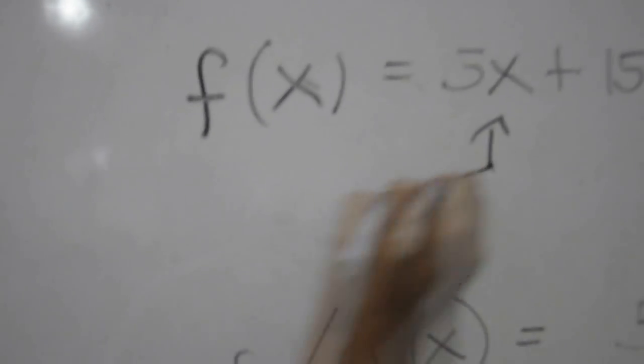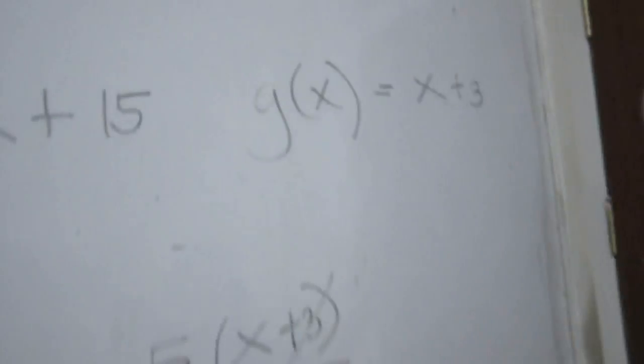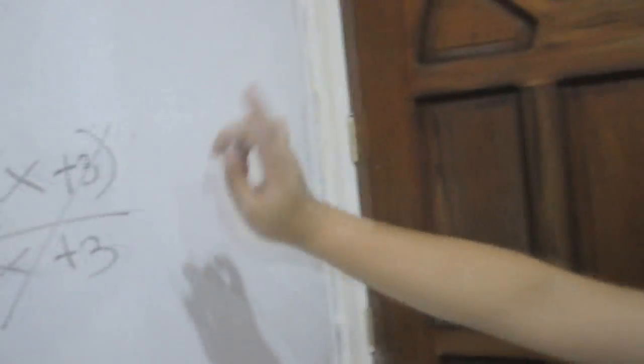The factor of this is equal to 5 times x plus 3. Function of g is equal to x plus 3. It is already factored, so we put it here.